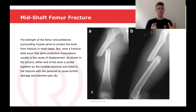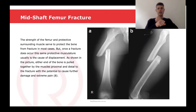As we can see in the pictures on the side, we've got an x-ray of a mid-shaft femur fracture. You can see the two ends of the bone, which are completely broken apart, have been pulled together and are overlapping. This is caused by the muscles on each end pulling the bones together, and this has the potential to cause further damage and extreme pain.